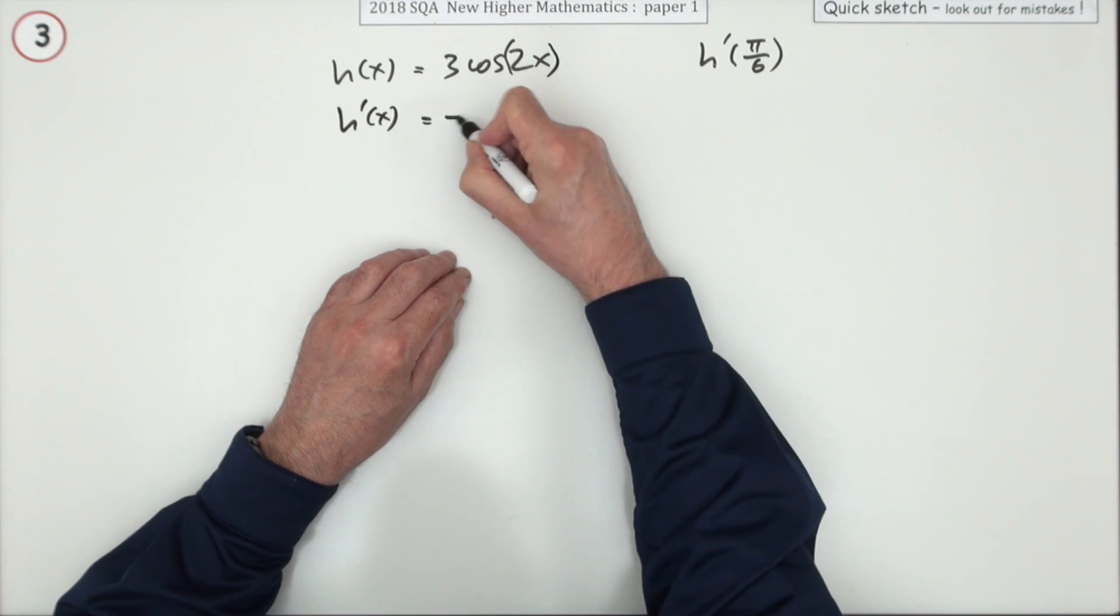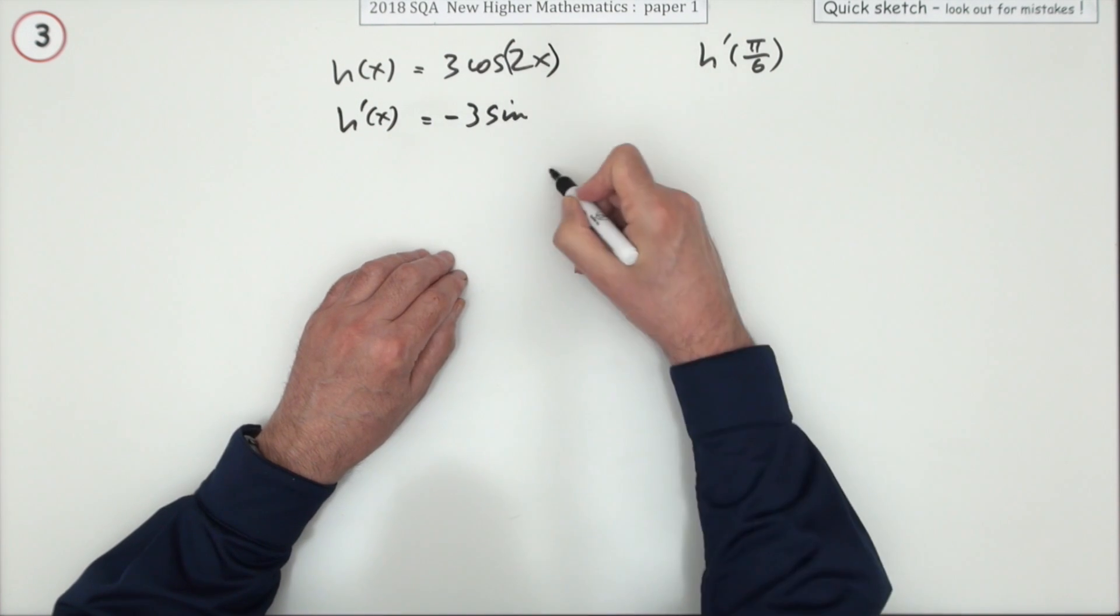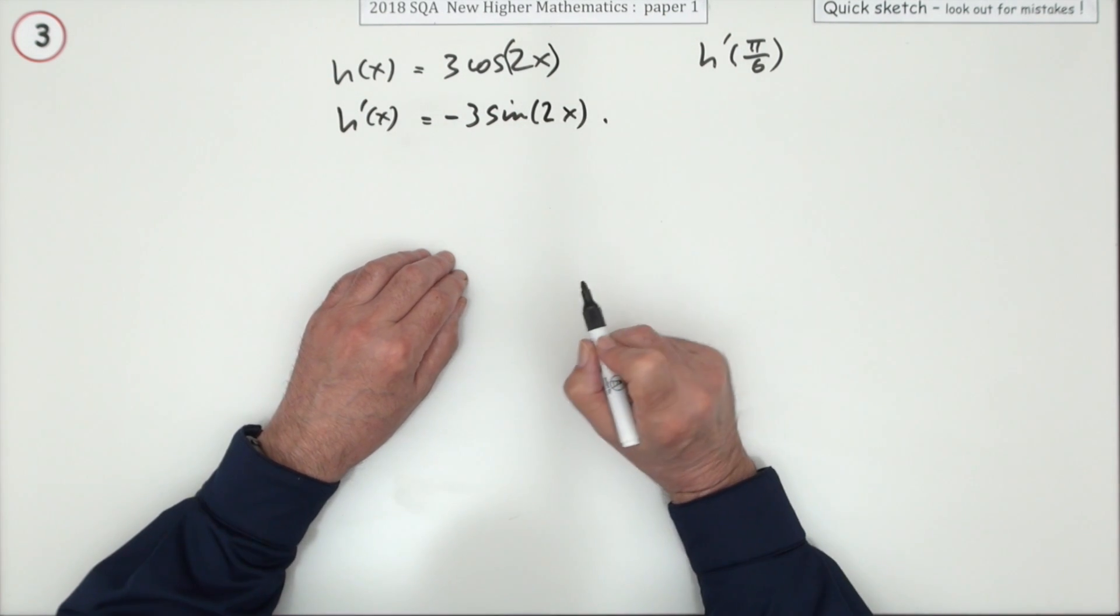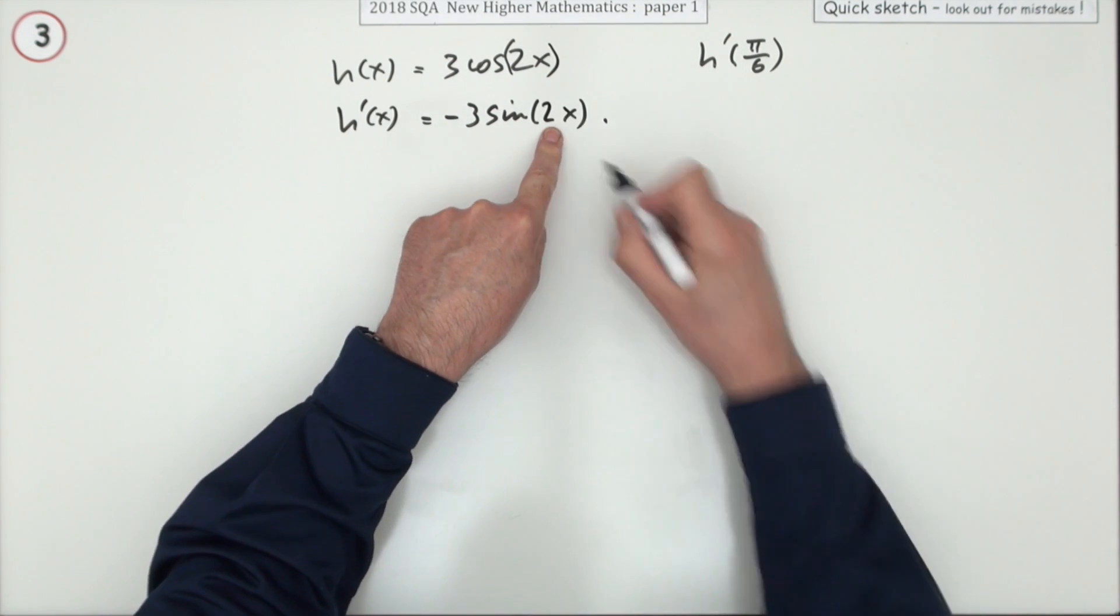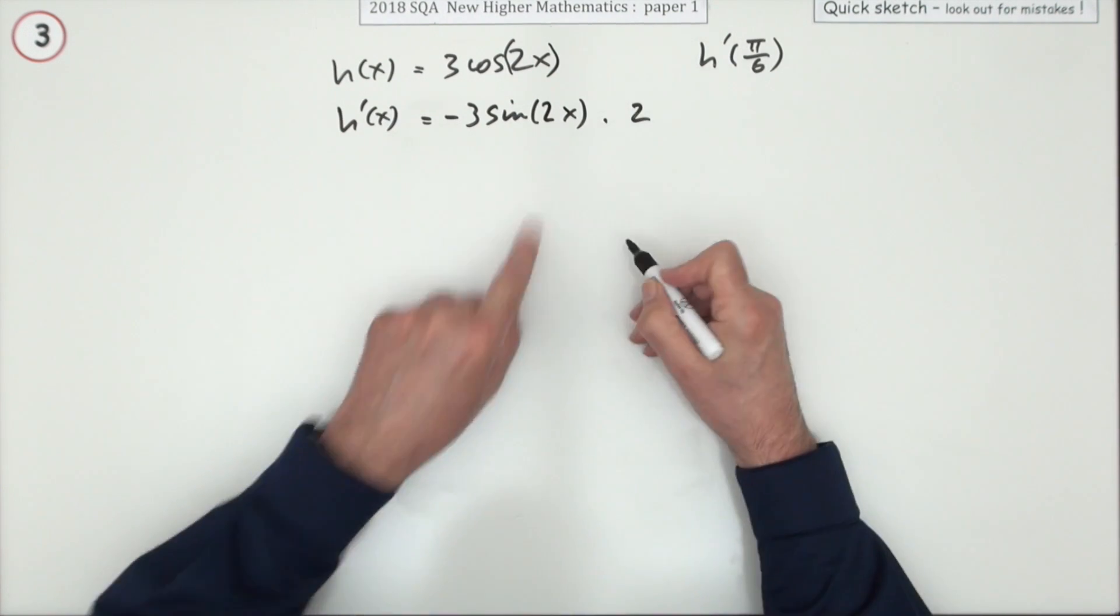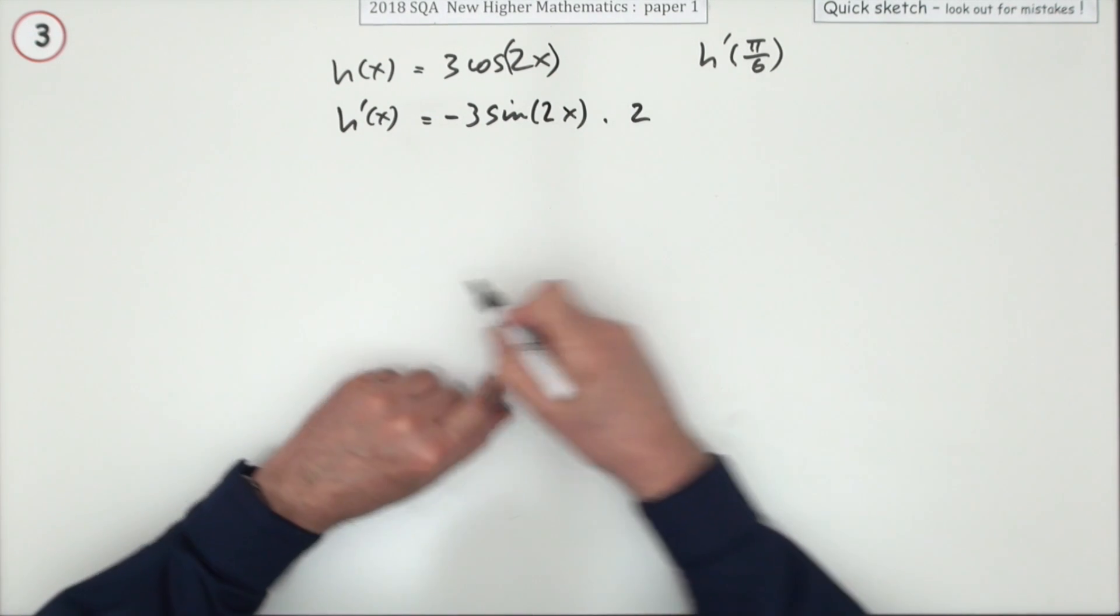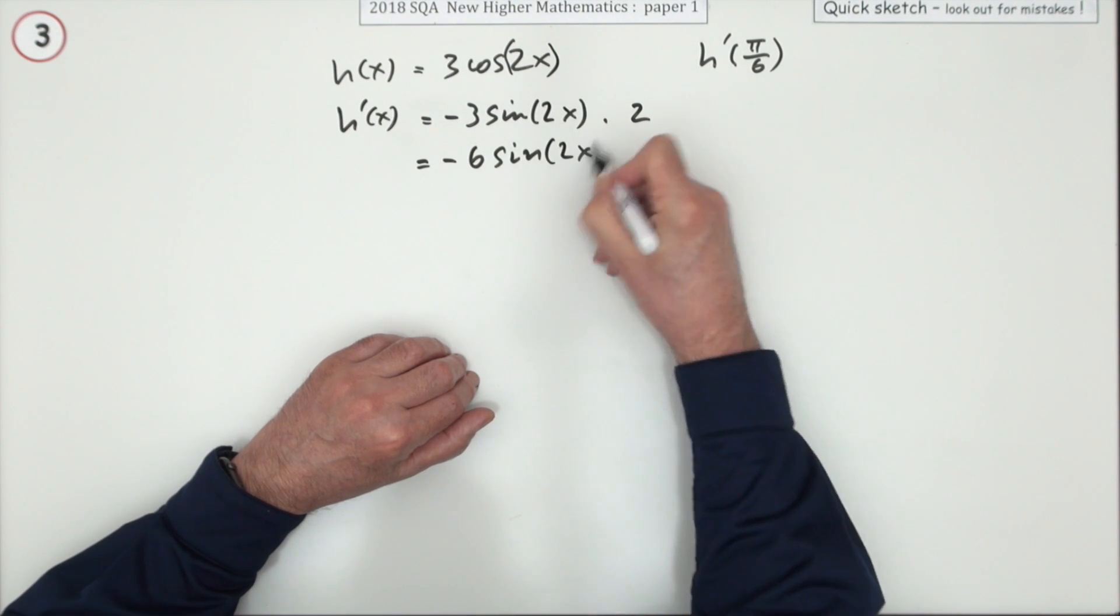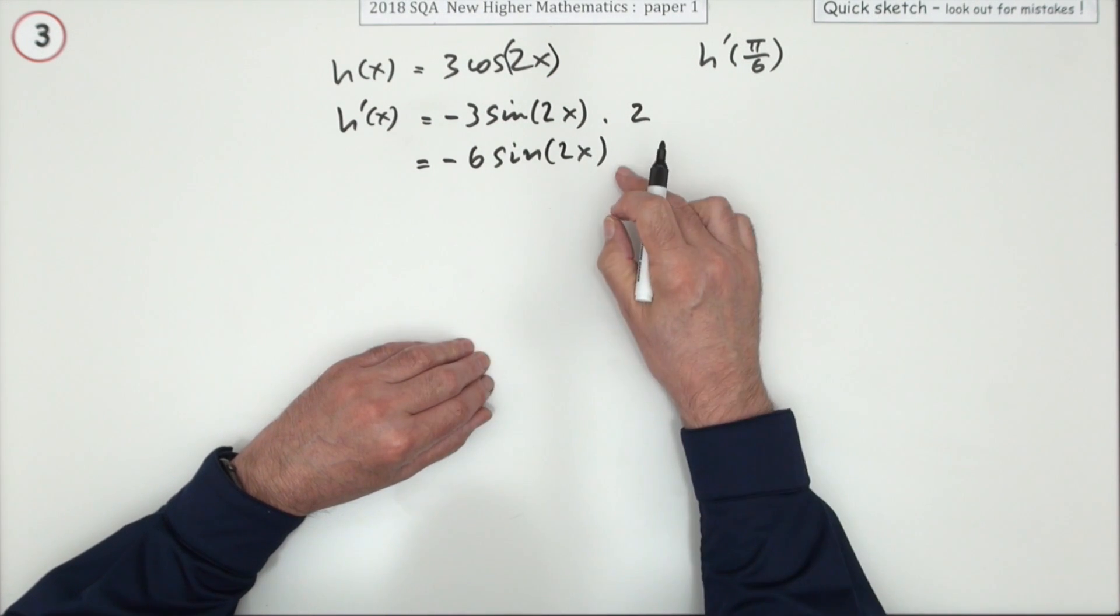So it'll be negative three because the coefficient is not going to change, sine of whatever it was, 2x. But then the whole thing would be multiplied by the inner derivative, so don't forget it should get multiplied by 2. The derivative of 2x is 2, so that means it's actually -6sin(2x).